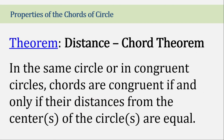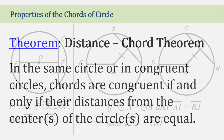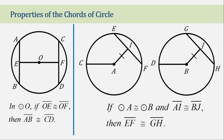The next theorem is the Distant Chord Theorem. In the same circle or in congruent circles, chords are congruent if and only if their distances from the center are equal. In circle O on the left, if segment AO is congruent with segment OF, this indicates that the two chords have the same distance from center O. Therefore, chord AB and chord CD are congruent.